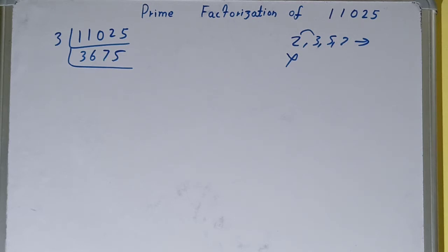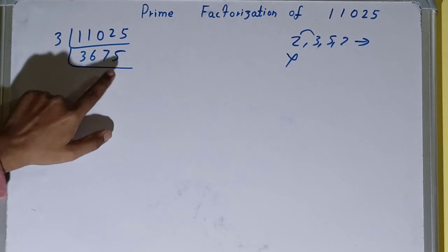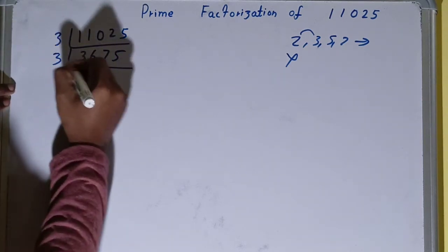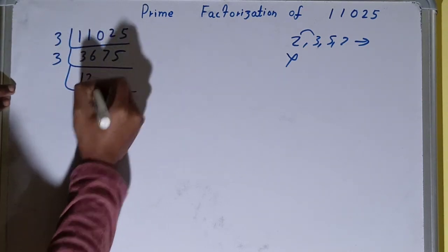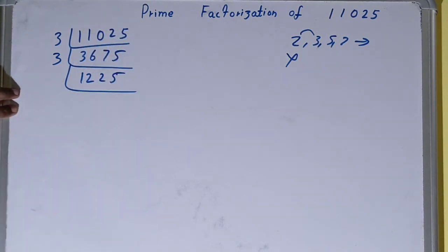Now is this further divisible by 3? We need to check. 3 twelves, 0, 36, 3 twos, 0, 6, 1, 5. Yes, it is divisible, so divide it. 3 twelves, 0, 36, 3 twos, 0, 6, 1, 5, 3 fives is 15. You will be getting 1225.